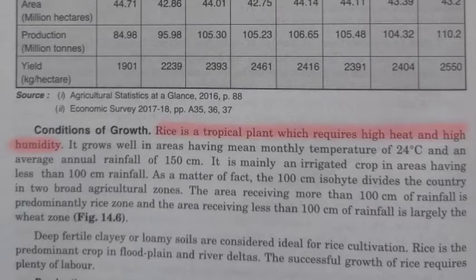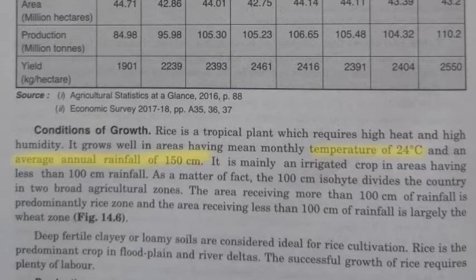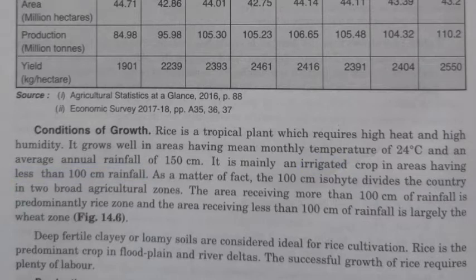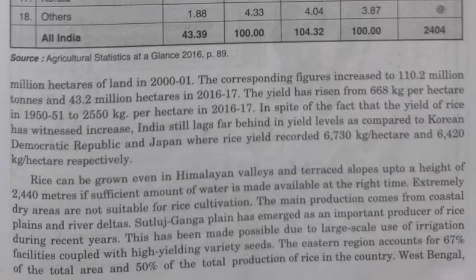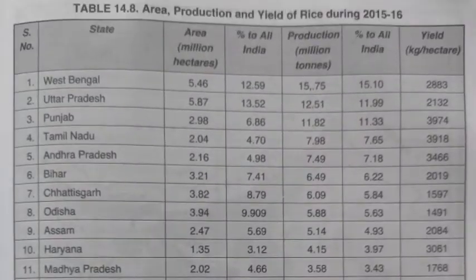Rice requires an average temperature of 24 degrees Celsius and average annual rainfall of 150 centimeters. It can also be grown in areas where rainfall is 100 centimeters or less, provided the area is well irrigated. Deep fertile clay and loamy soils are ideal for rice cultivation. Rice requires plenty of labor and can be grown even in Himalayan valleys and on terrace slopes up to a height of 2400 meters, if sufficient water is available.